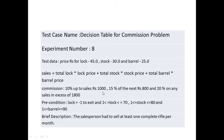For commission calculation: it is 10% up to sales of 1000 rupees, 15% of sales for the next 800, and 20% on any sales in excess of 1800. The precondition is that lock equals minus one to exit the while loop. This indicates the salesperson should stop selling locks, stocks, and barrels and report to the gunsmith for calculation of sales and commissions.